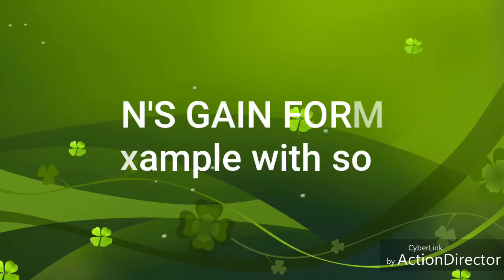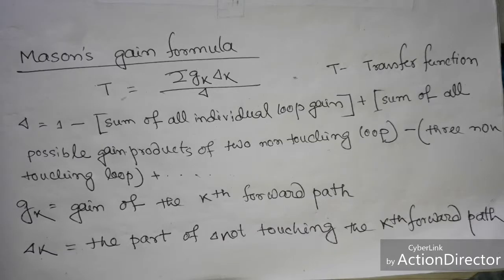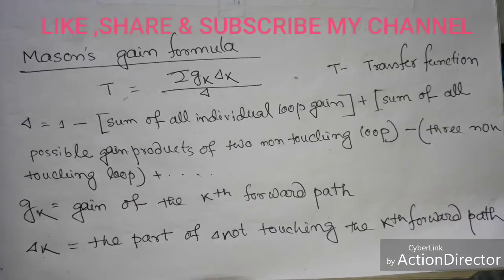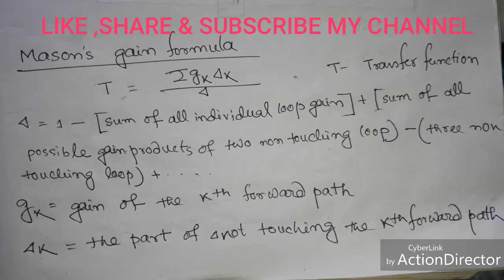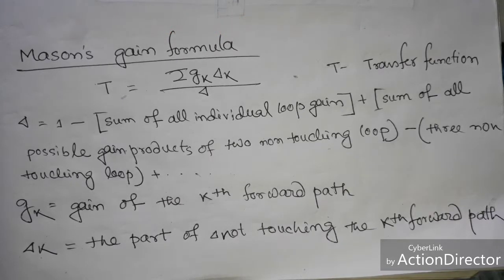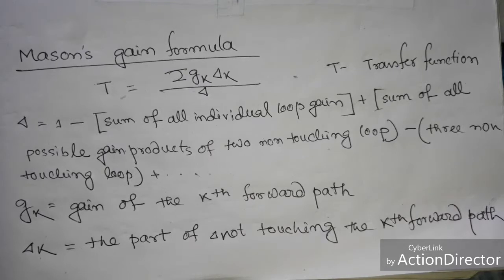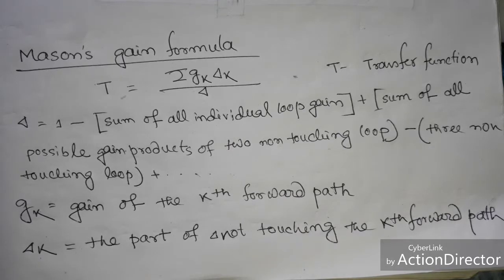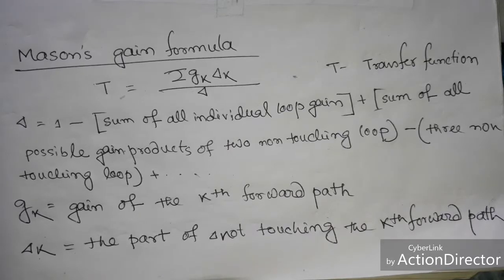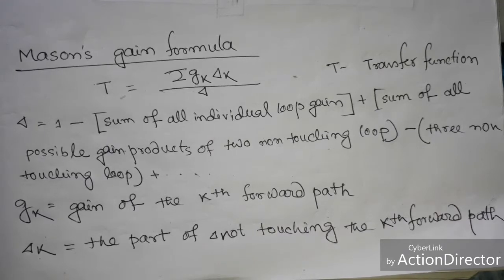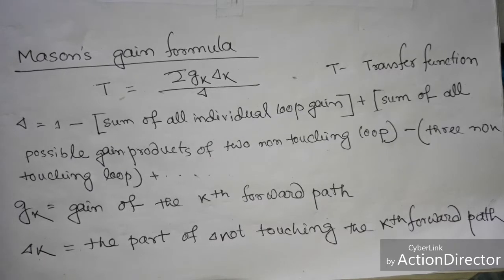Mason's Gain Formula: T equals summation of G_k times Δ_k divided by Δ, where T represents the transfer function and Δ represents one minus the sum of all individual loop gains, plus the sum of all possible gain products of two non-touching loops, minus the sum of all possible gain products of three non-touching loops, and so on.